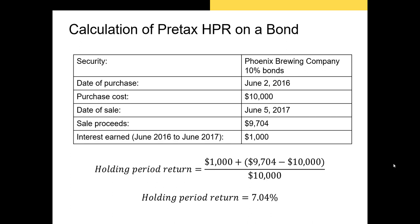If we want to calculate the holding period return on a bond, it's more or less the same thing. We have a purchase cost of $10,000, and we sell the bonds for $9,704 on June 5th, 2017. In the interim, we earned about $1,000 in interest from coupon payments. We take our income plus the ending price minus the beginning price, divided by the beginning price, and that gives us a holding period return of 7.04%.